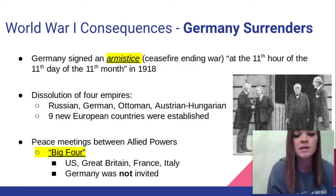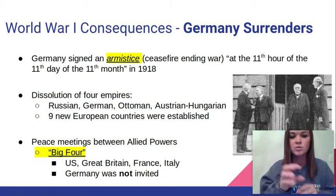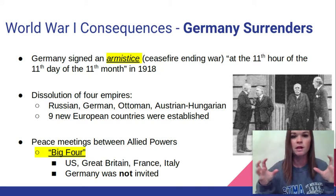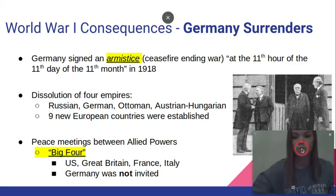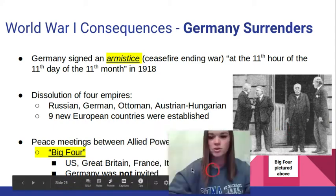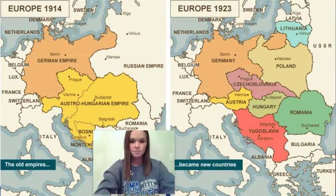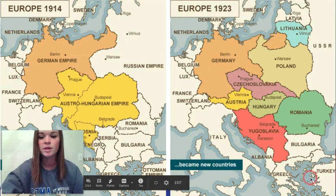There were nine new European countries established after the ending of those four empires. Those four empires broke up and nine new European countries were established in their place. There were peace meetings between the Allied powers — the Big Four: the U.S., Great Britain, France, and Italy. They met to decide what was going to happen next. Germany was not invited, and we'll talk about why that is important. Here is a photo of the leaders of the Big Four. President Wilson is that tall figure to the far right. Europe in 1914 is pictured to the left, and Europe in 1923 is pictured to the right — those old empires became new countries.